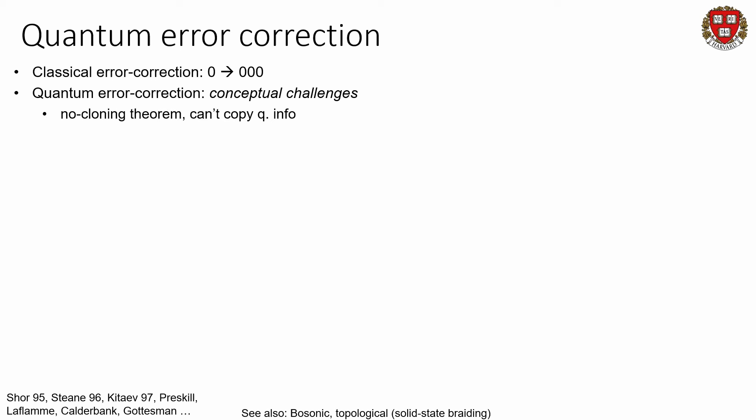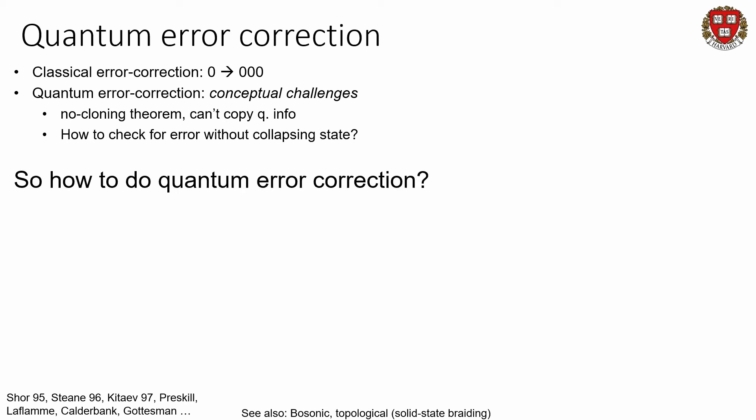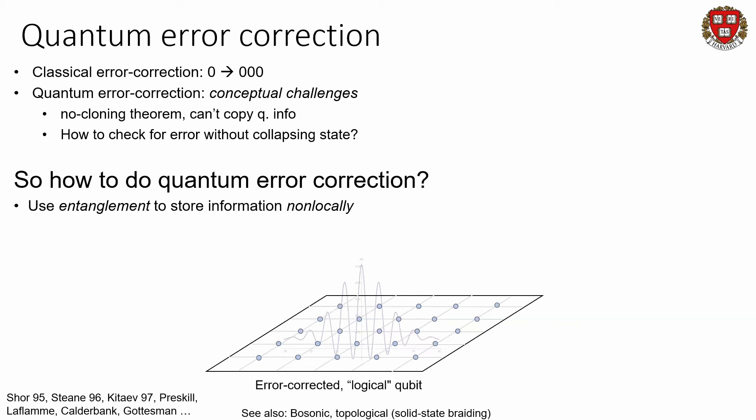One challenge is that we can't copy quantum information — we can't copy a qubit state psi into three copies of itself. Another conceptual issue is that when you measure a quantum bit, you collapse it. So how are you even going to check for errors without disturbing the underlying state? Remarkably, it is possible to do quantum error correction, but using a very different physical mechanism. What you do is use entanglement — one of the core principles of quantum mechanics — to store information non-locally.